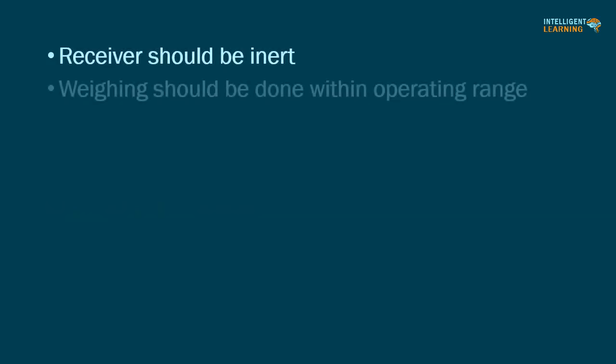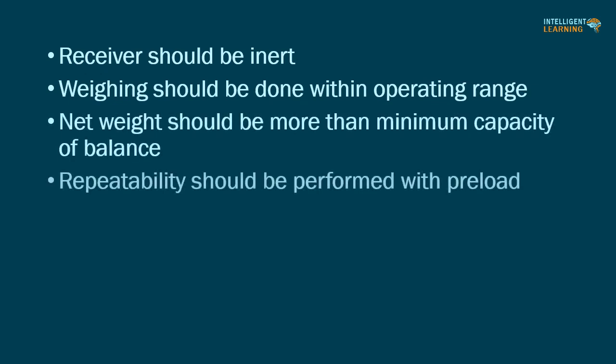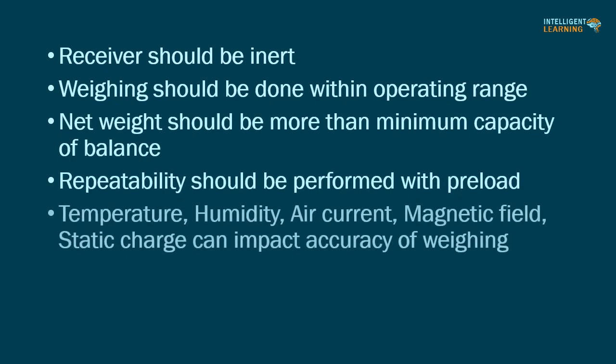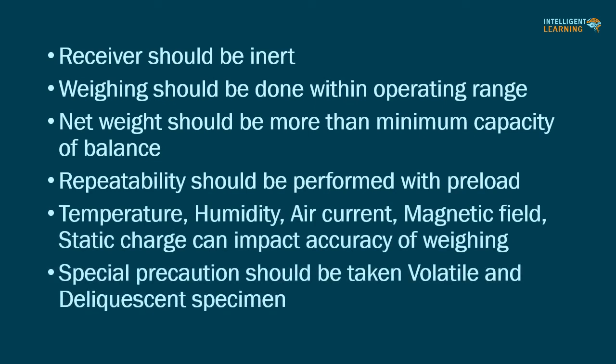Quick recap of this video: receivers should be inert; weighing should be done within operating range; net weight should be more than the minimum capacity of the balance; repeatability should be performed with preload. Temperature, humidity, air current, magnetic field, and static charge can impact the accuracy of weighing. Special precautions should be taken for volatile and deliquescent specimens.